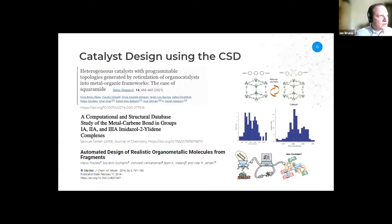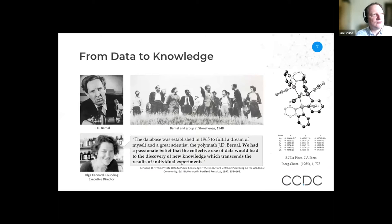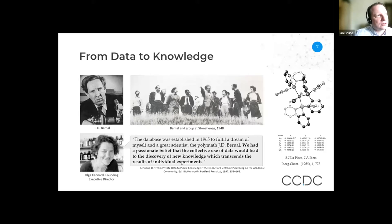These are just three examples of a vast range of literature where people have used the collection of data in the CSD to do work in the area of catalysis — whether it be combining the data with other experimental techniques to design new catalysts, probing particular bonding in a class of catalysts, or developing systems that can automate the design of these things. This is very much a good illustration of the original vision behind the formation of the Cambridge Structural Database, articulated by its founding executive director Olga Kennard: a passionate belief that collective use of data can lead to the discovery of new knowledge and insights that transcend the results of individual experiments.